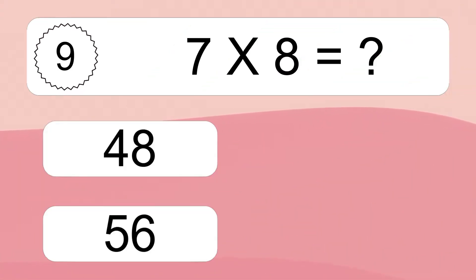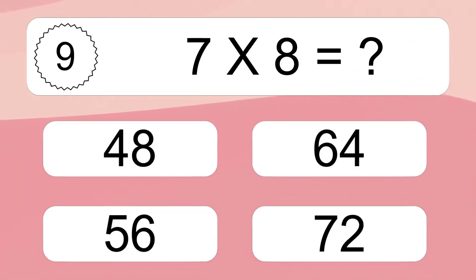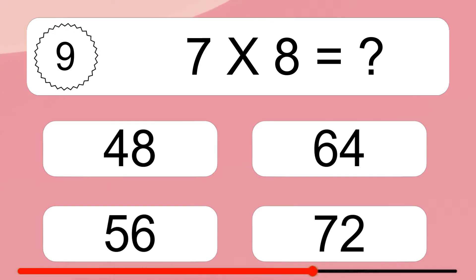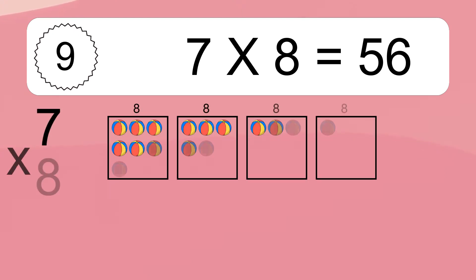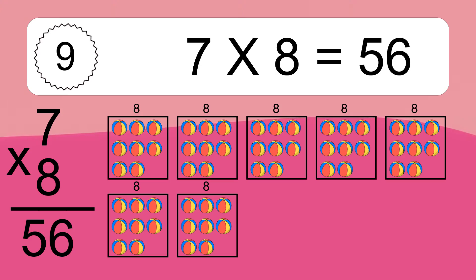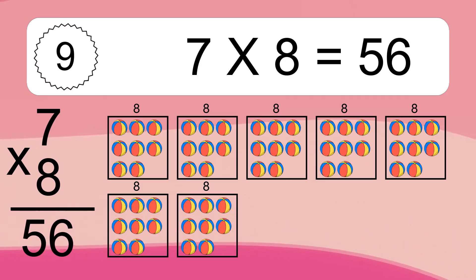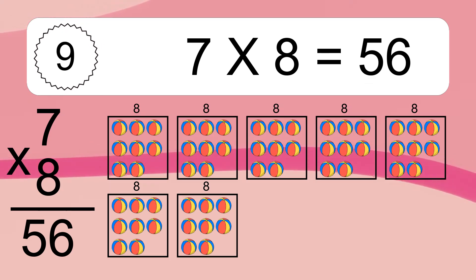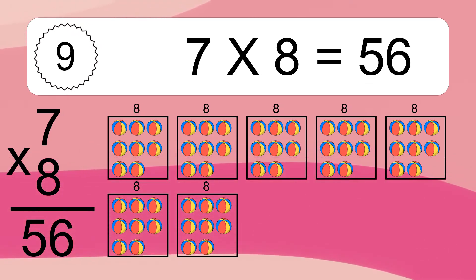7 times 8 equals what? 7 times 8 equals 56. We have 7 boxes, and each box has 8 colorful balls inside. If you count all the balls in all the boxes together, you will have 7 times 8 balls. This equals 56 balls.